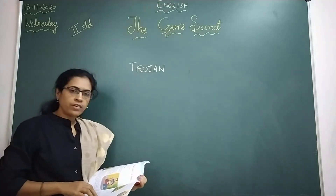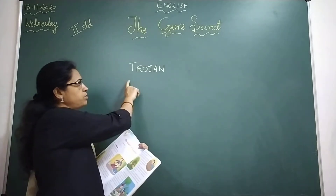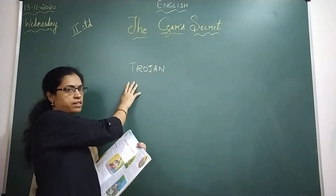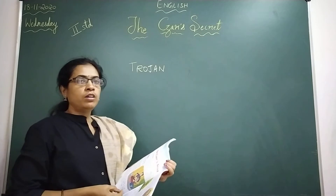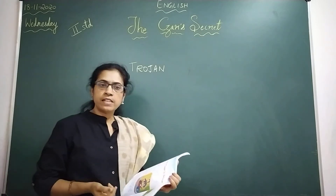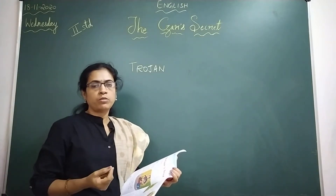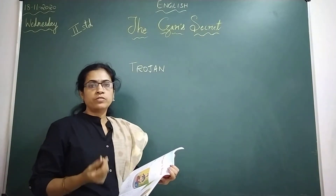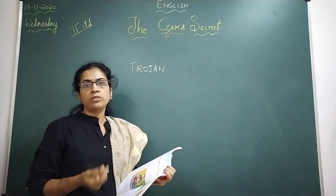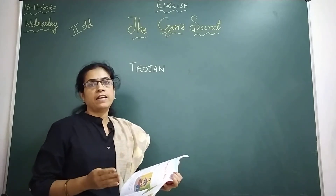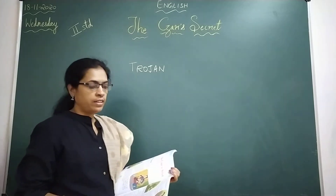Long ago there lived a Czar named Trojan. He had a secret that none of them knew in that town. Nobody knew about the Czar's secret except the barber.